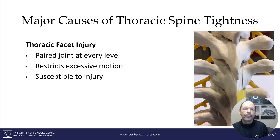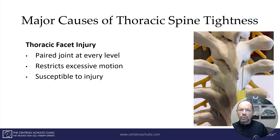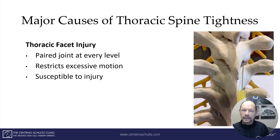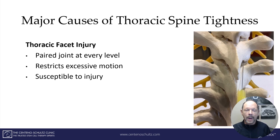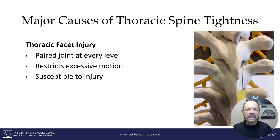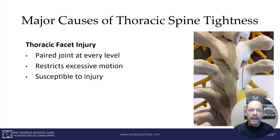Number two is a thoracic facet injury. A facet is a paired joint in the spine — there's one on the right and one on the left. It's an important joint lined with cartilage, just like your knee or ankle, and it restricts excessive motion to protect the spine. Like the disc, it is susceptible to injury and degeneration and can cause significant injury, particularly after a motor vehicle collision. It's the second cause of thoracic spine tightness.